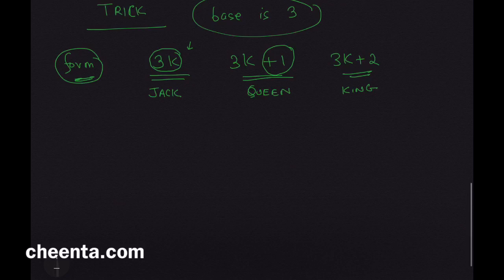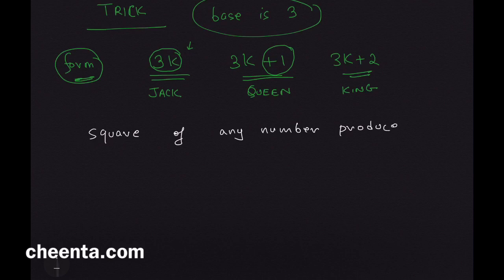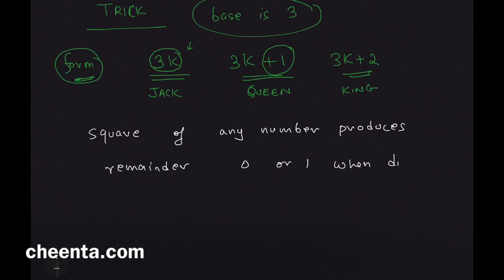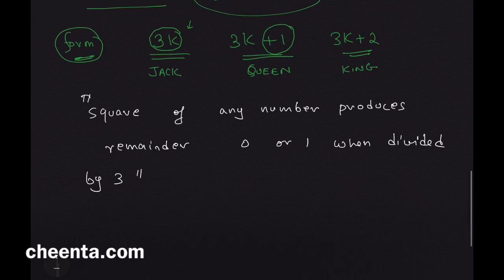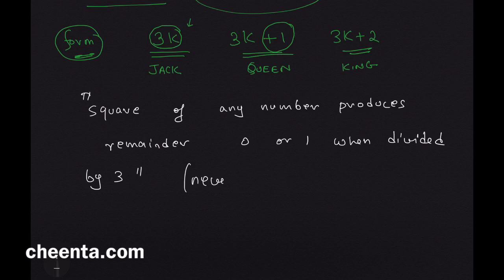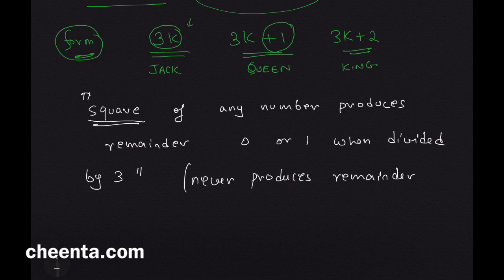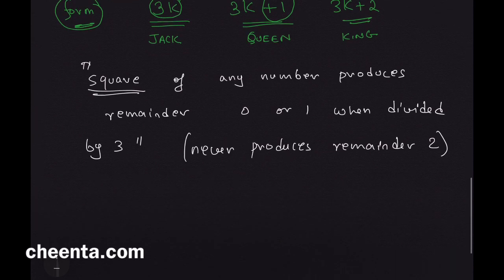These forms are very useful. For example, can you prove that the square of any number produces remainder 0 or 1 when divided by 3 — that is, it never produces remainder 2? Any square number never produces remainder 2 when divided by 3.